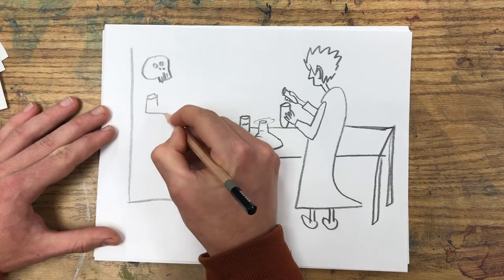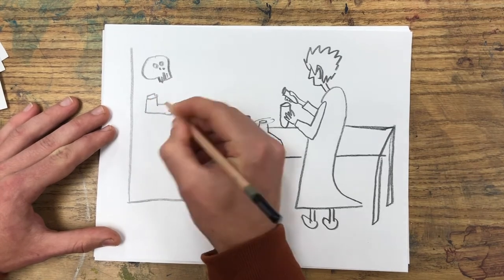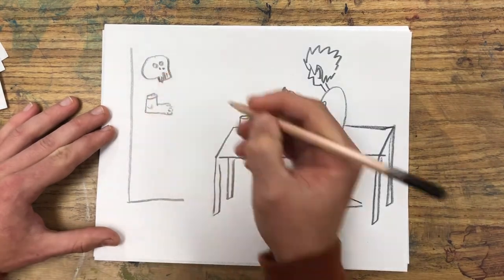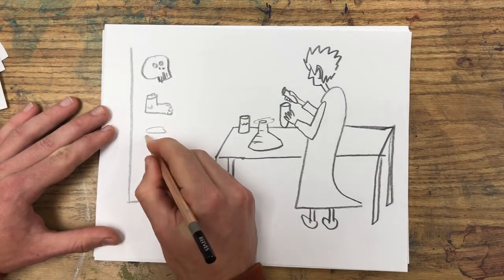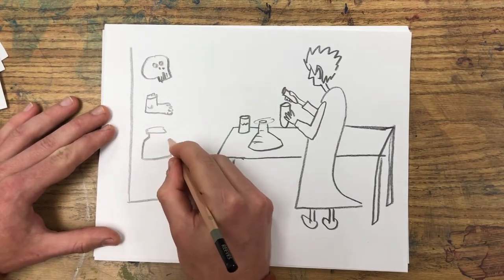So again, I'm drawing my subjects first: a skull, a human foot (remember this is an evil scientist), a jar full of eyes.